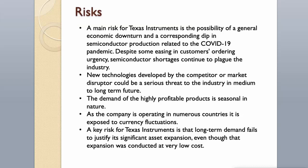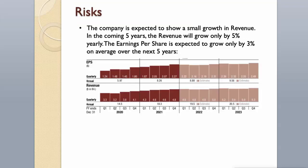Risks. A main risk for Texas Instruments is the possibility of a general economic downturn and a dip in semiconductor production related to COVID-19. Semiconductor shortages continue to plague the industry. New technologies developed by competitors or market disruptors could be a serious threat in the medium to long-term. Demand for highly profitable products is seasonal in nature, and the company is exposed to currency fluctuations operating in numerous countries. A key risk is that long-term demand fails to justify its significant asset expansion. The company is expected to grow revenue by only 5% yearly, with earnings per share growing only 3% on average over the next five years.